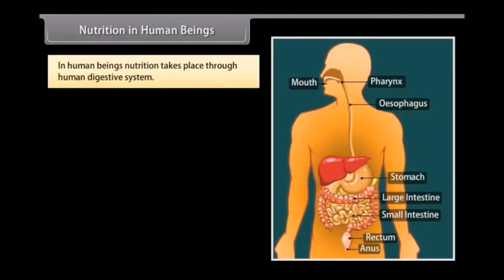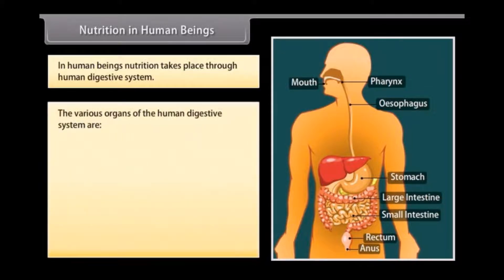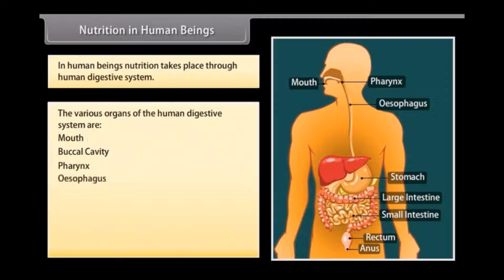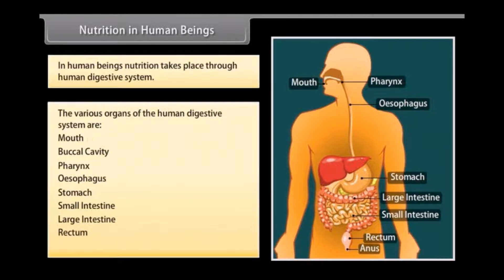Nutrition in human beings takes place through the human digestive system. The various organs of the human digestive system are: mouth, buccal cavity, pharynx, esophagus, stomach, small intestine, large intestine, rectum, and anus.